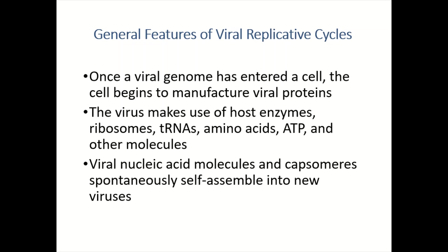In the next slides we'll discuss the detail of these cycles. Once a viral genome enters into the cell, the cell begins to manufacture viral proteins. The virus cannot manufacture its own viral proteins because it does not have the enzymes which are important for the replication of its nucleic acid and proteins. The virus makes use of host enzymes, ribosomes, transfer RNAs, amino acids, ATP, and other molecules for the production of their proteins and nucleic acid.